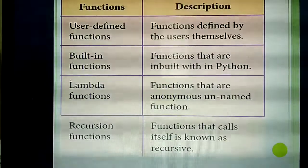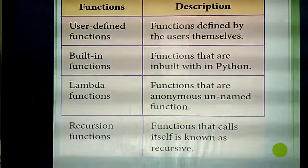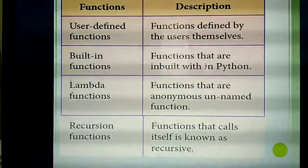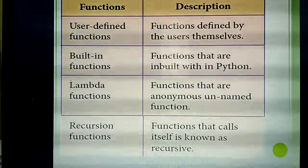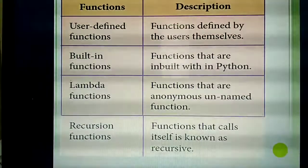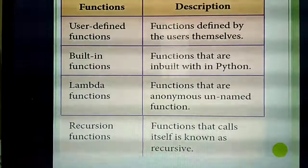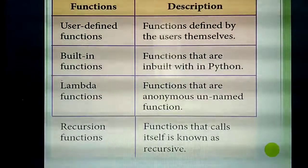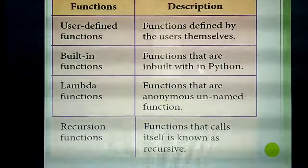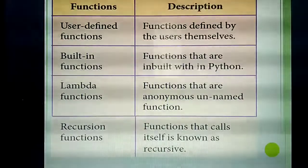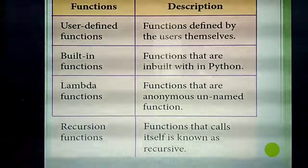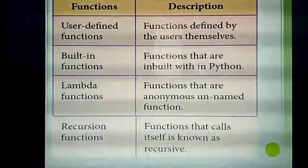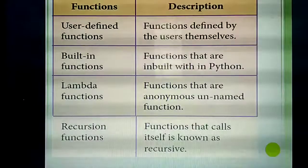The third type is lambda function. Lambda function means some functions have no names — functions defined without any name are called lambda functions.